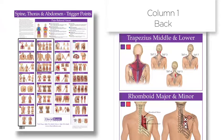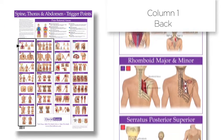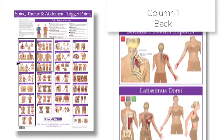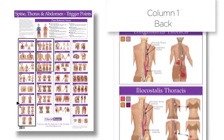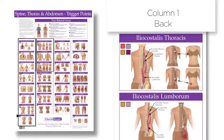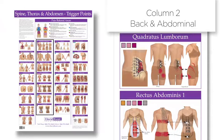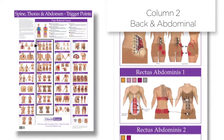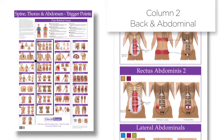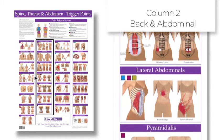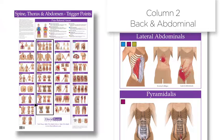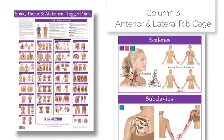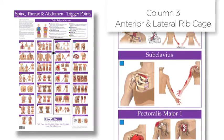Column 1 and the top of column 2 groups the muscles of the back superficial to deep. Column 2 also groups the abdominal muscles. Column 3 groups the muscles attaching to the anterior and lateral ribcage.